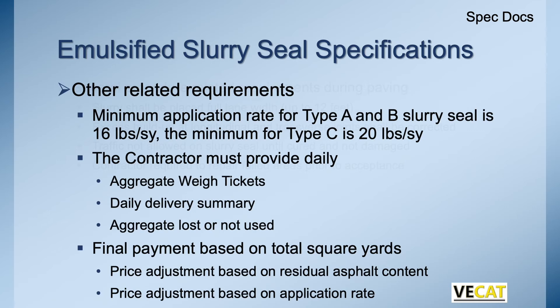Some other things to keep in mind: we have minimum application rates. For Type A and B slurries, at least 16 pounds per square yard; Type C is a minimum of 20 — all going back to the size of the aggregate. The contractor must provide daily aggregate weigh tickets, a daily delivery summary, and aggregate lost or not used — we're not going to pay for what's not out there. Final payment is based on square yards, with price adjustments based on residual asphalt content and application rate.